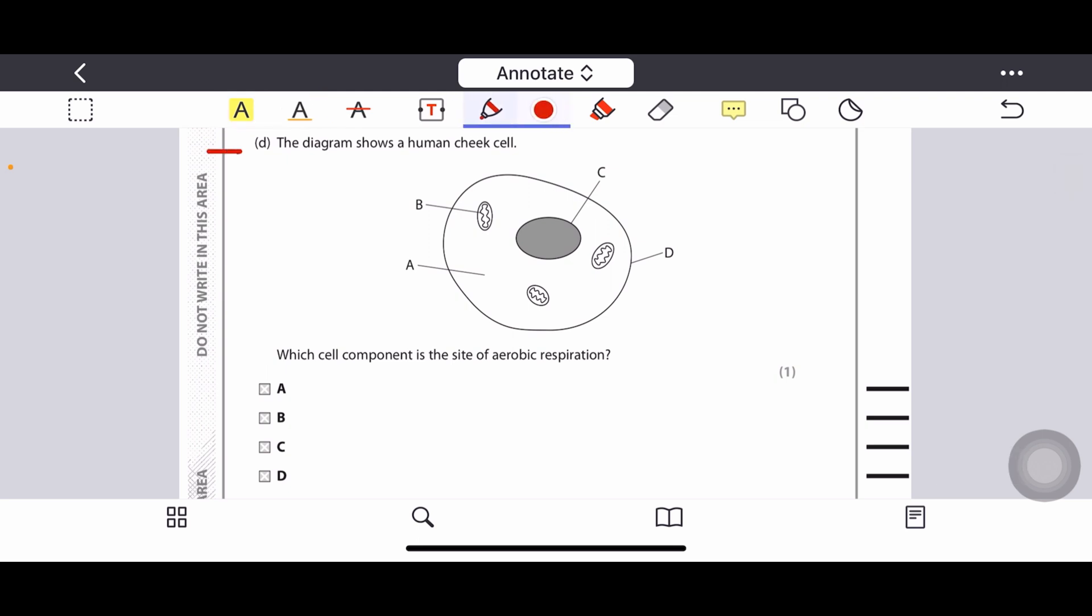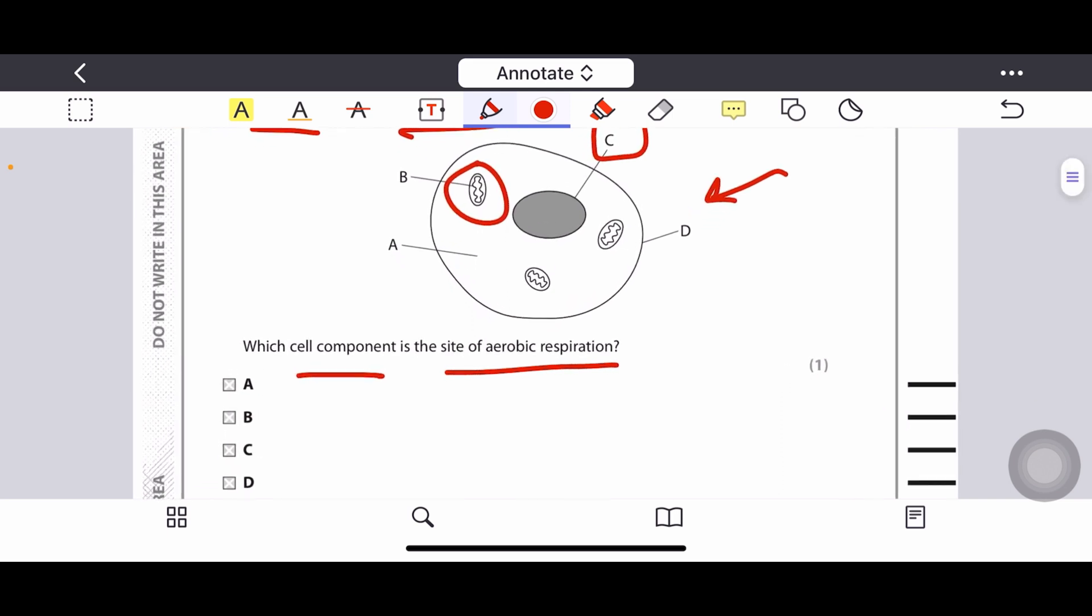Question D: The diagram shows a human cheek cell. Which cell component is the site of aerobic respiration? Option C is showing nucleus, option B is showing mitochondria. As we know, mitochondria is the site of aerobic respiration, so it must be mitochondria. D is showing cell membrane and A is hyaloplasm. So option B is definitely the right answer, mitochondria.